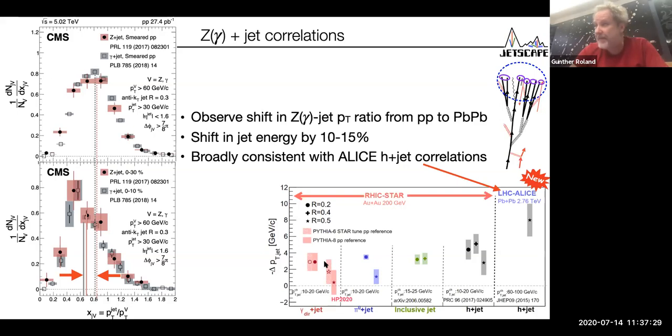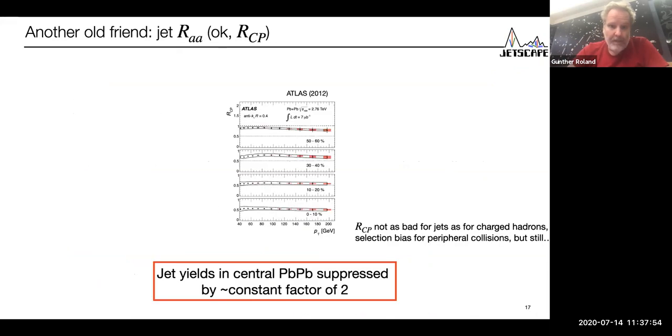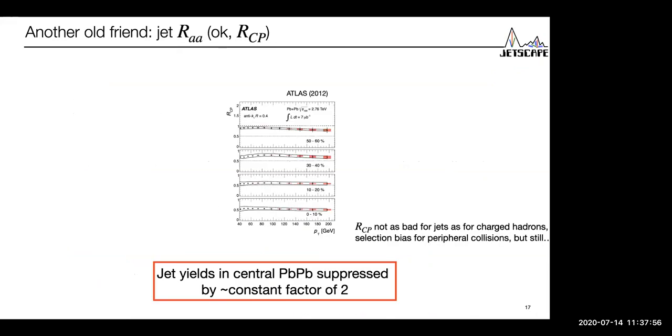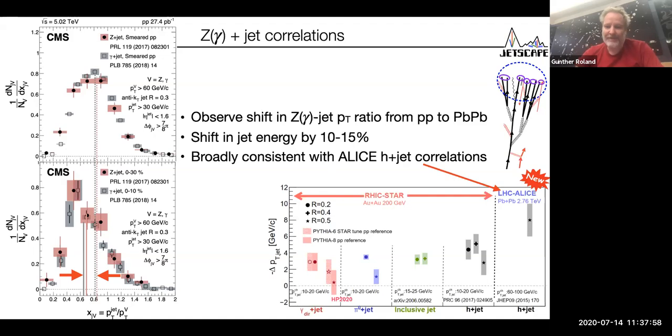So 10 to 15 percent of the initial jet energy gets transported out of the jet cone and are not reconstructed as part of the jet through the energy loss, through the modification of the parton shower in the quark-gluon plasma. These estimates are broadly consistent with estimates from LHC based on hadron jet correlations and show a sensible trend compared to measurements at lower quark-gluon plasma densities at RHIC from STAR. It's good to keep that number in mind because from the R_AA measurements where R_AA gets suppressed to 0.2 or 0.5, sometimes you get the impression that jet quenching is this gigantic effect. On average, well, it is a big effect, 10 to 15 percent, but most of the jet energy remains within the jet cone.